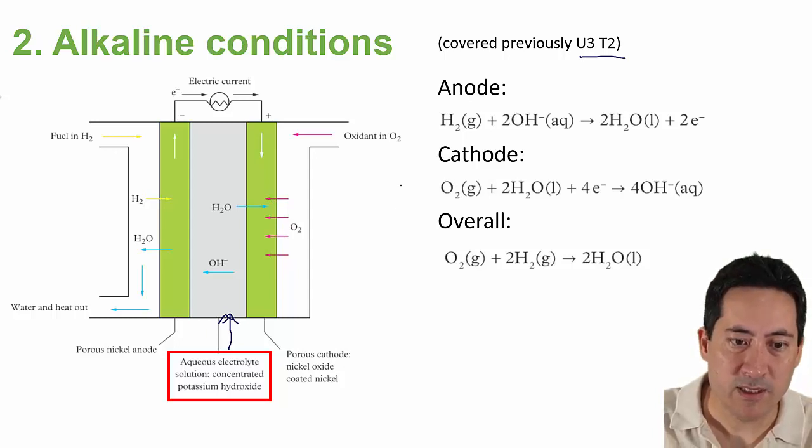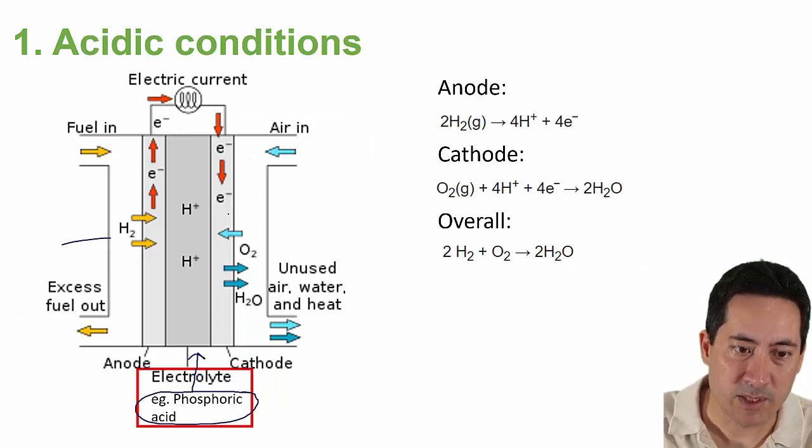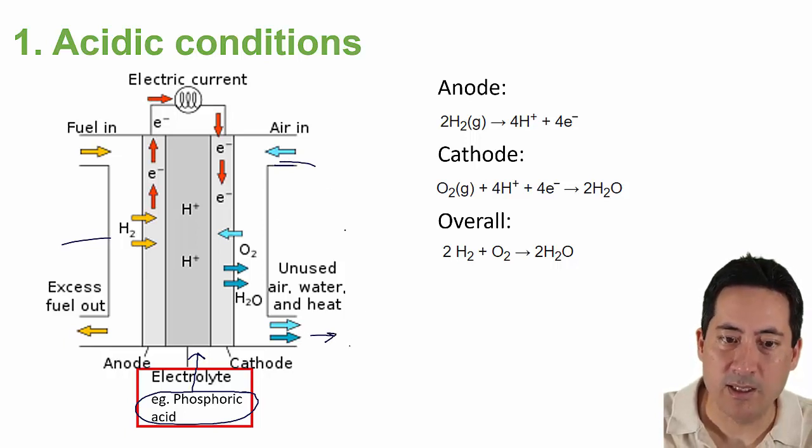And so the key difference is for the alkaline ones, the H2 fuel is also where the water comes out. But for the acidic conditions, where the O2 goes in, the H2O comes out. And so you need to be able to recognize the half equations, or at least which one's getting oxidized and where.